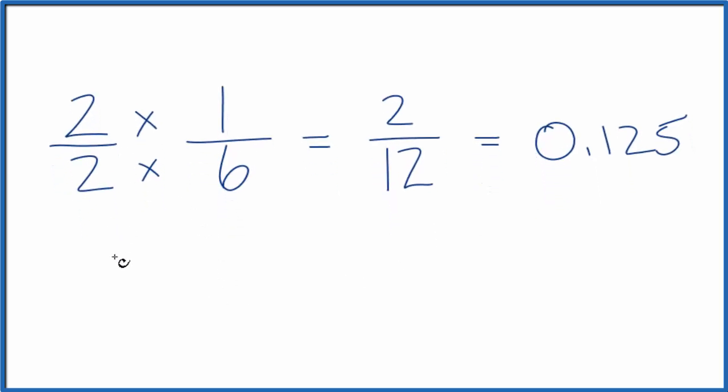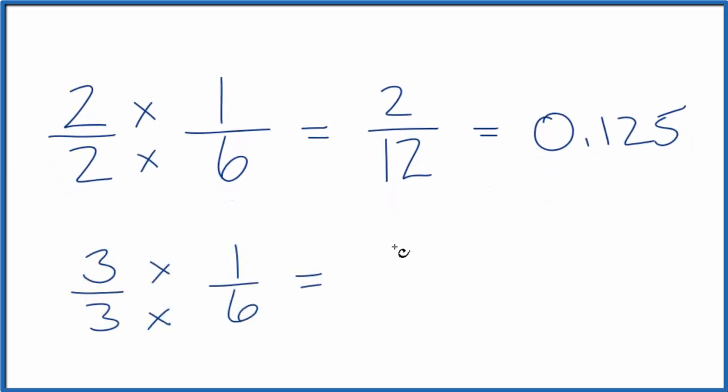Let's try 3 over 3. 3 times 1 is 3. 3 times 6 is 18. Divide 3 by 18, you get 0.125. This is an equivalent fraction to 1/6.